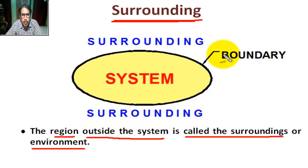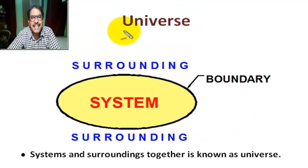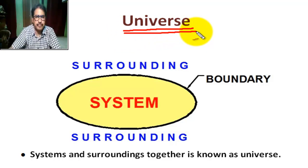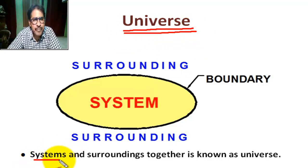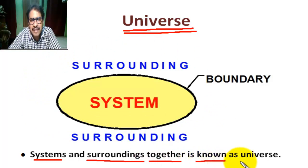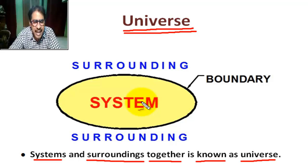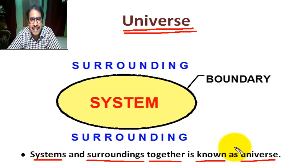Everything external to a system is the surrounding. The boundary, it is the surrounding together, is known as universe. The system and its surrounding form the universe. Okay, it is clear my students. Thank you.